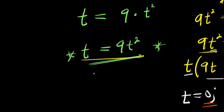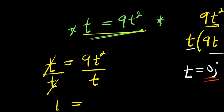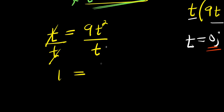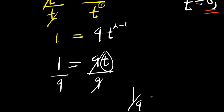The other way is to solve t equals 9t squared by dividing both sides by t. t divided by t eliminates t giving 1, and 9t squared divided by t, subtracting exponents, gives 9t to the power 1. So 1 equals 9t, and dividing by 9 gives t equals 1 over 9. This approach gives only one solution.